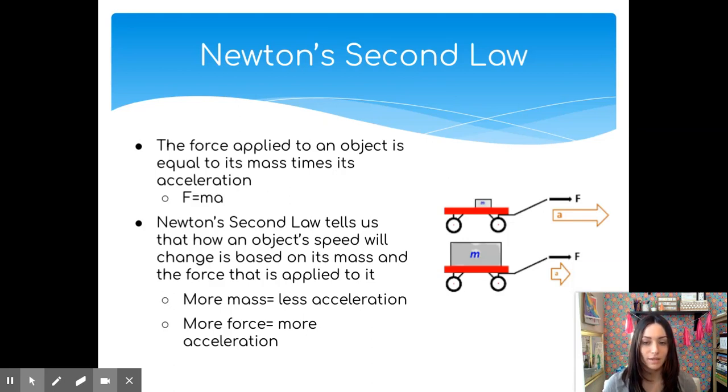Newton's Second Law is a scientific law or concept that tells us that the force that I apply to an object is equal to the object's mass times or multiplied by its acceleration. This just means that an object's speed and how that object's speed will change is based on the object's mass and how much force I apply to it. Simply put, this tells me that more mass will produce less acceleration or less change in speed and more force will produce more acceleration or more change in speed.